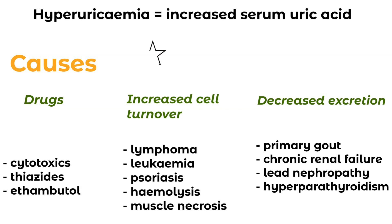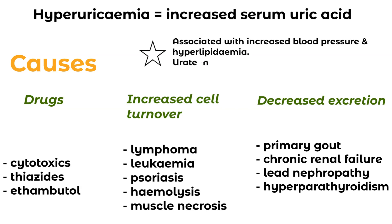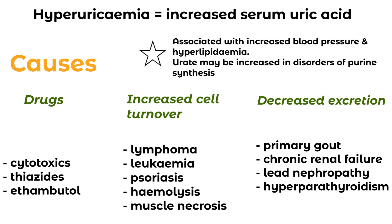Moving on to causes that increase cell turnover — things like lymphoma, leukemia, certain other diseases such as psoriasis, hemolysis, and muscle necrosis. And then the third category is where there's decreased secretion: primary gout, chronic renal failure, lead nephropathy, and hyperparathyroidism.